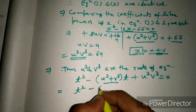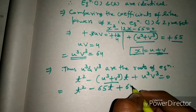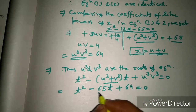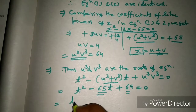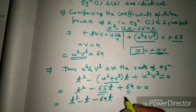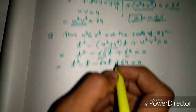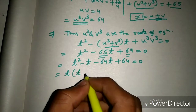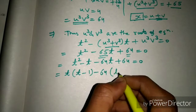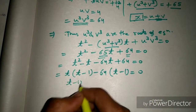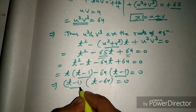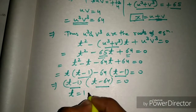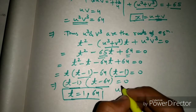Substituting the values: t² - 65t + 64 = 0. The sum is 65 and the product is 64, so we factor as -64 and -1. This gives t² - 64t - t + 64 = 0, so t(t - 1) - 64(t - 1) = 0, therefore (t - 1)(t - 64) = 0. So t = 1 or t = 64.